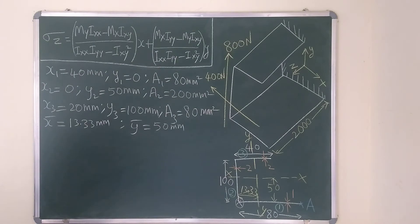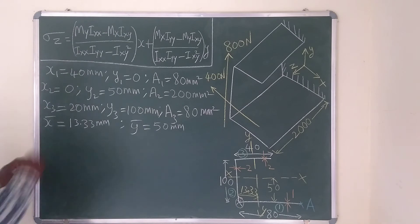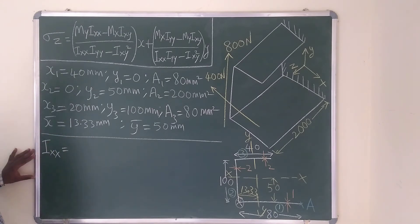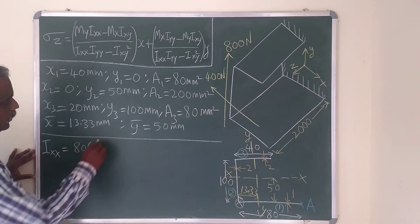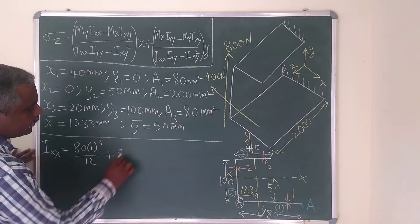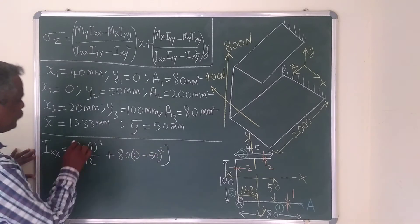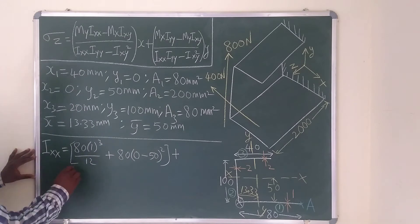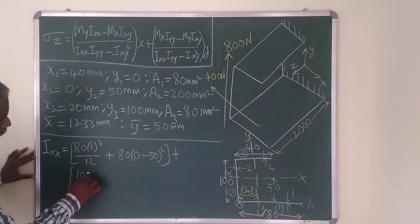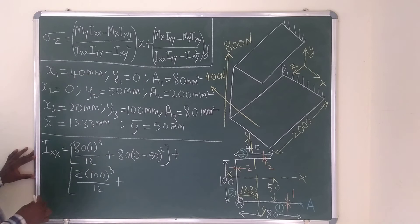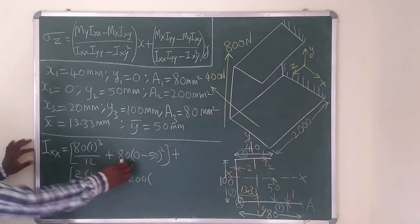Now it is required to calculate the area moment of inertia: Ixx, Iyy, and Ixy. The formula for Ixx for Section 1 is: bd³/12 + A·(Y1 − Y-bar)², where the first section is 80×1³/12 + 80·(Y1 − Y-bar)². For Section 2: 2×100³/12 + 200·(Y2 − Y-bar)². Y2 is 50 minus Y-bar is 50, squared.